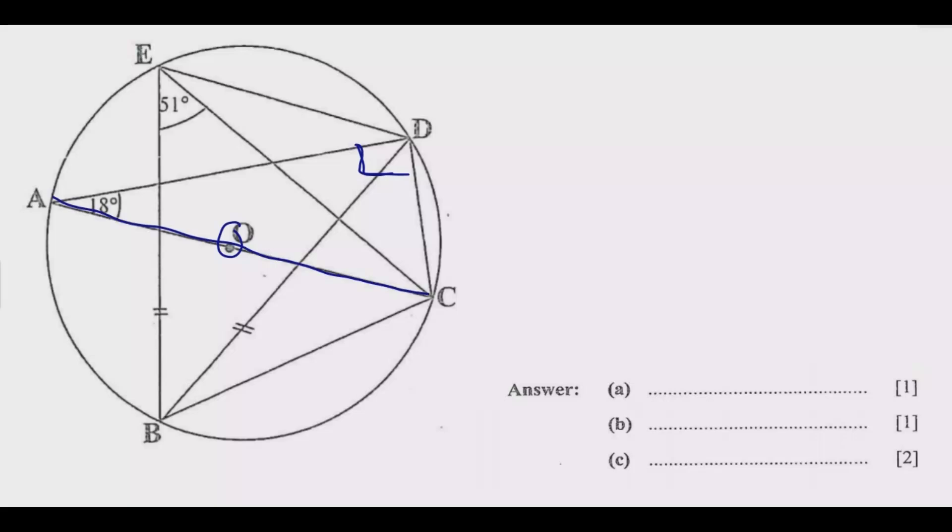Number two: angles in the same segment are equal. We have a chord starting from B and C. This angle and this angle are the same because they're in the same segment, sharing the same chord while touching the circumference. So if this is 51, this angle should also be 51 degrees.